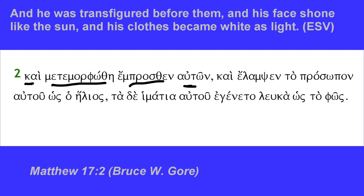Since the disciples — Peter, James, and John — were there and witnessed this incident, they continue. 'Kai elampsen' — this is from the word 'lampo,' which means to shine, usually to shine brilliantly or brightly. Third person singular aorist active indicative. So it shone, referring to the face — 'to prosopon autou' — the face of him shone. And shone 'hos ho helios' — like or as the sun.